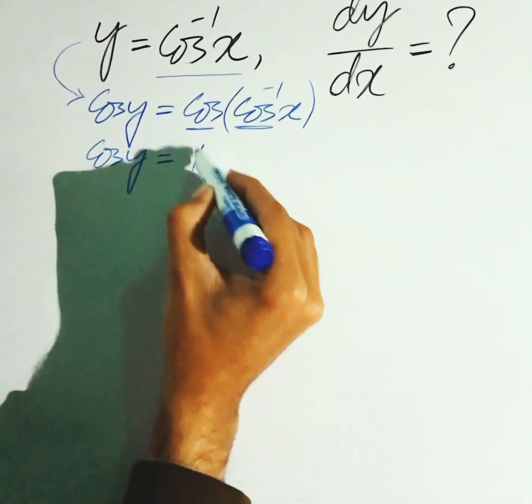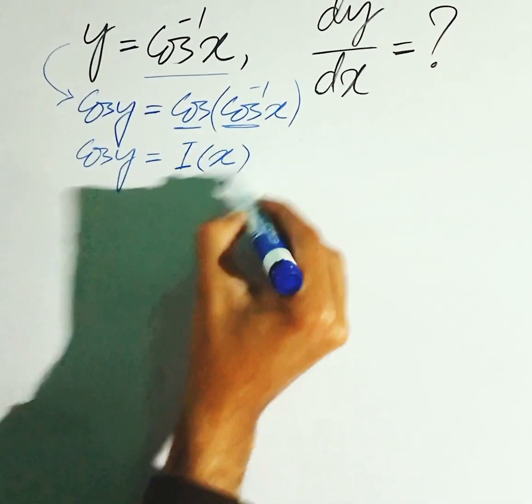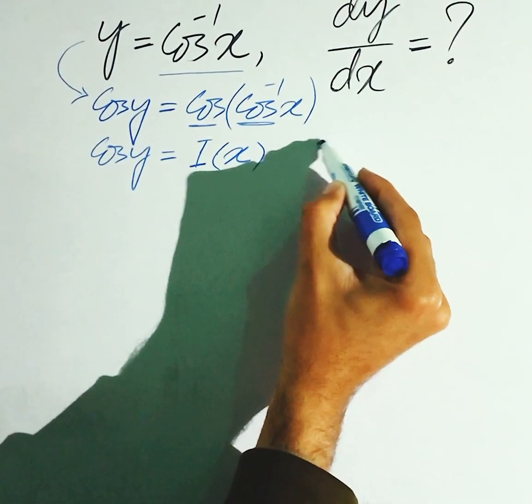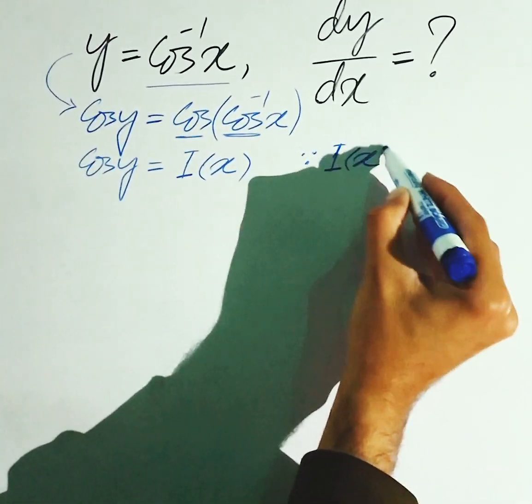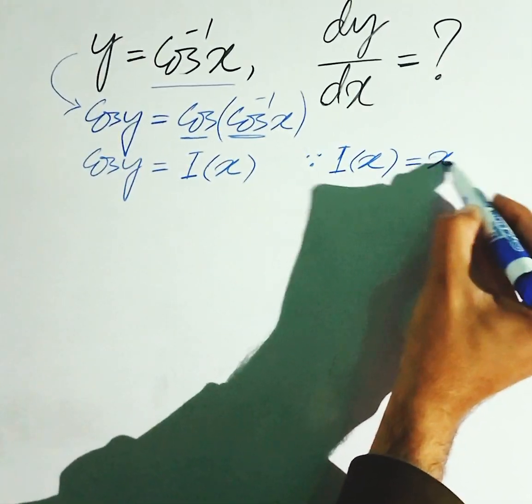We get identity of x. Identity function, aksa function hota hai ki jis me aap jo bhi input do gae, aur wo hi aapko output milega.